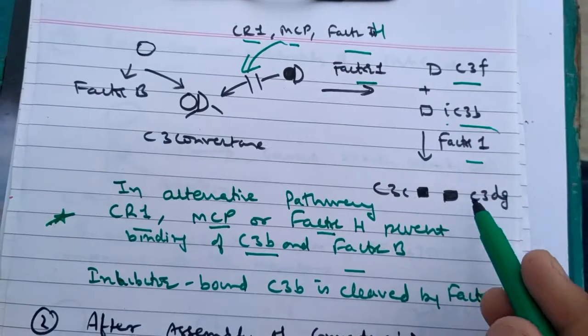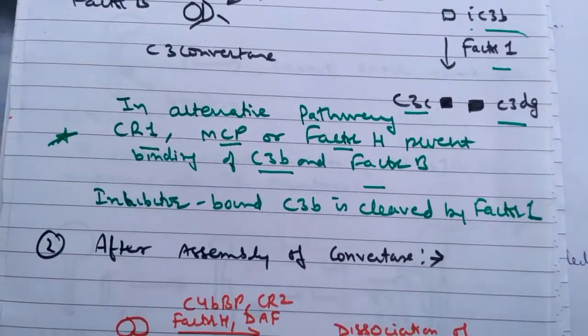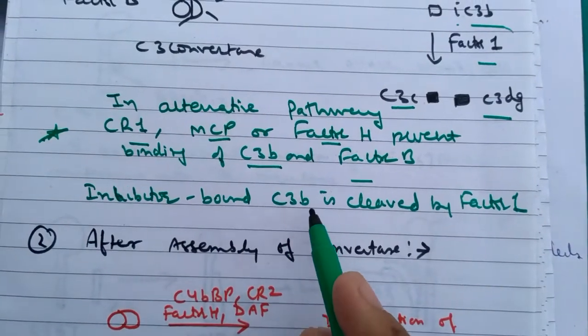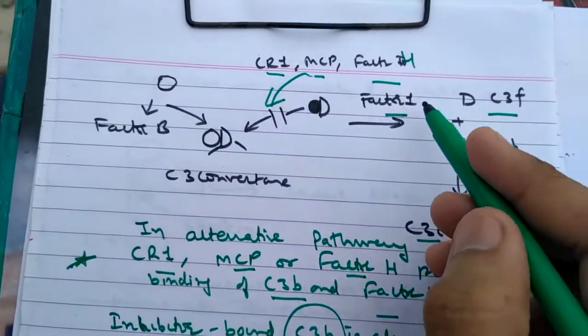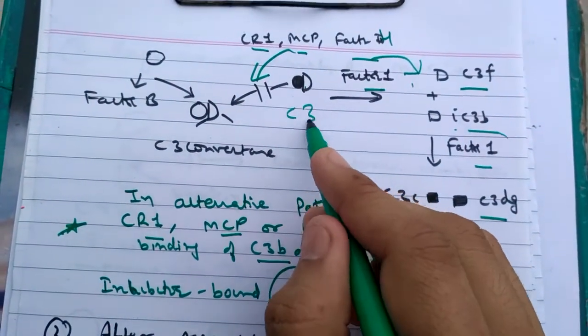Further, factor 1 cleaves them into C3C and C3D. So inhibitor-bound C3B is cleaved by factor 1. So factor 1 is further cleaving inhibitory-associated C3B.